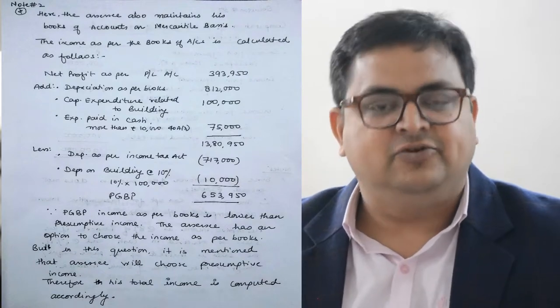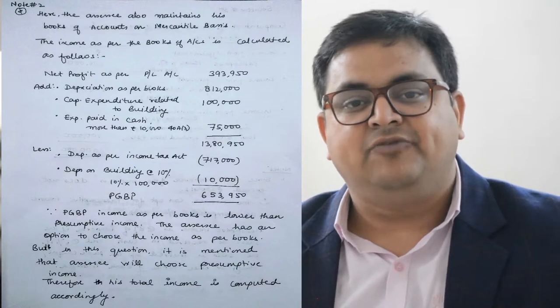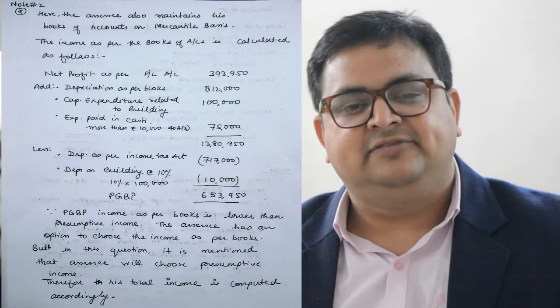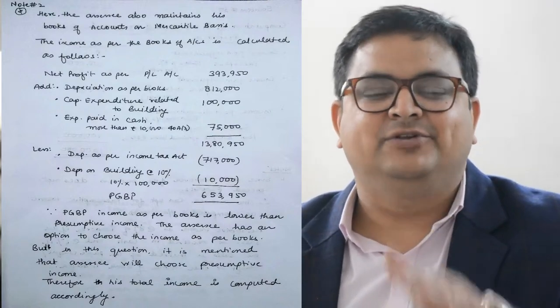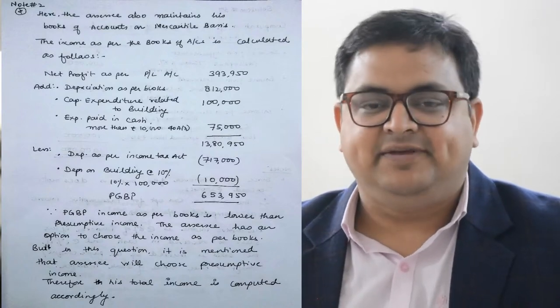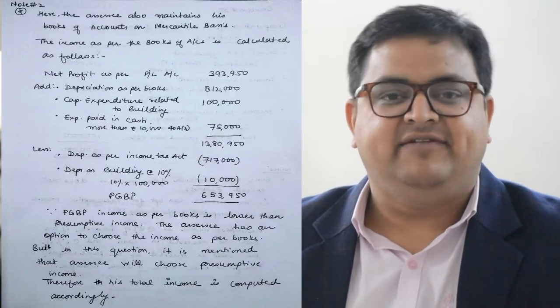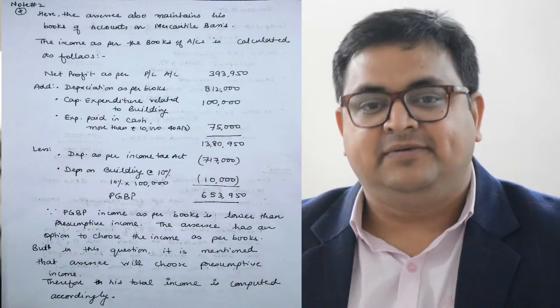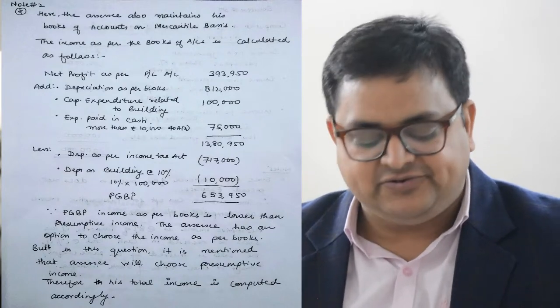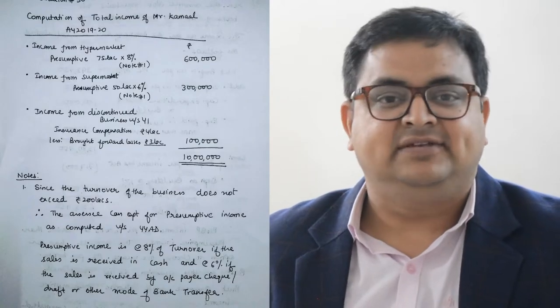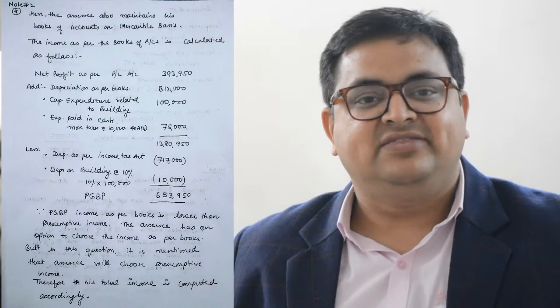The assessee maintains books of accounts on mercantile basis. Net profit as per books is ₹3,93,950. Add back the capital expenditure of ₹1 lakh wrongly debited to P&L. Add back the cash payment disallowance of ₹75,000. Less: depreciation as per Income Tax Act ₹7,17,000. Less: additional depreciation of ₹10,000 on the ₹1 lakh building at 10%. So PGBP income as per books of accounts comes to ₹6,53,950. On presumptive basis it was ₹9,00,000.